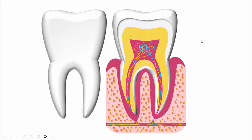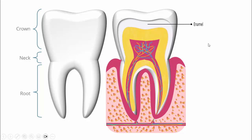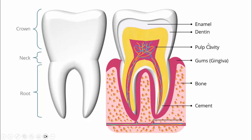First, let's talk about the overall parts of the tooth. This is the crown, this is the neck, and this is the root. Then we'll see what the parts look like inside — you can see here the enamel, dentin, pulp, gums, bone, cement, and some nerves and blood vessels.